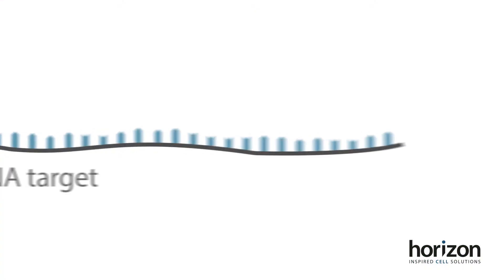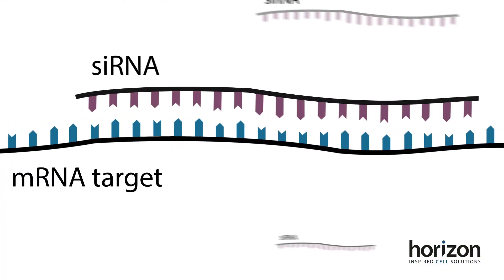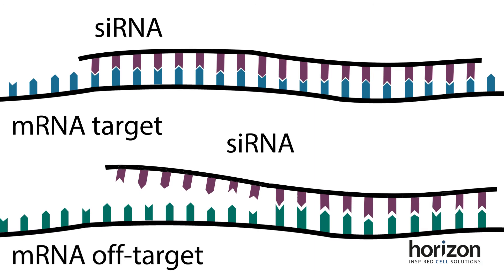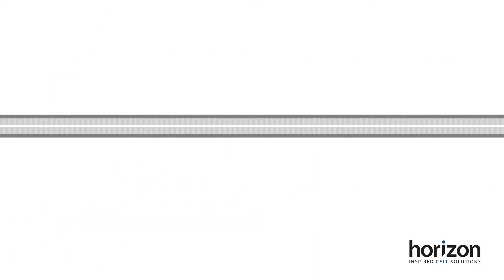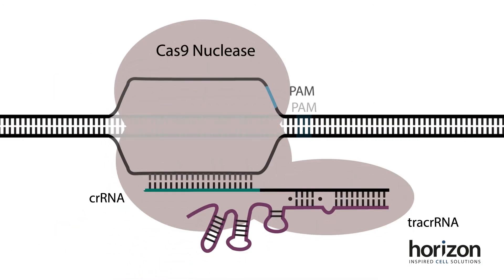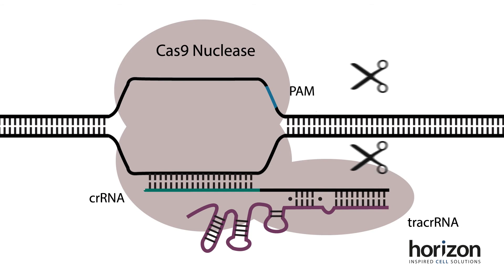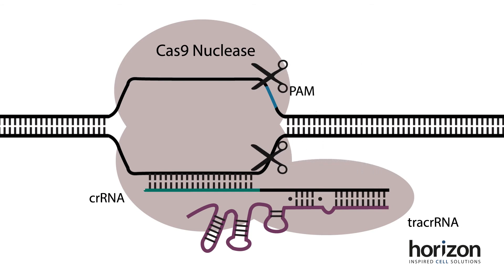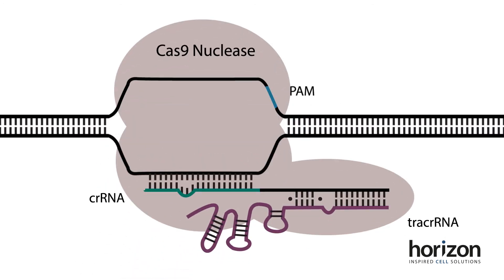Specificity. With RNAi, you can target anywhere along a transcript, and you may cause silencing of unintended targets due to partial complementarity. Alternatively, CRISPR-Cas9 can only target regions adjacent to a certain nucleotide motif, or PAM sequence, and more stringent target complementarity is required before the DNA is cut.